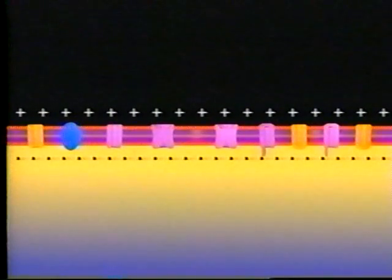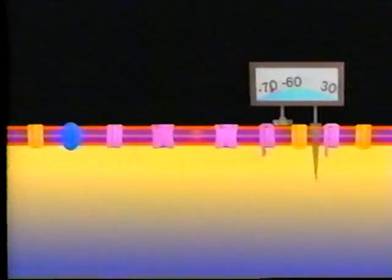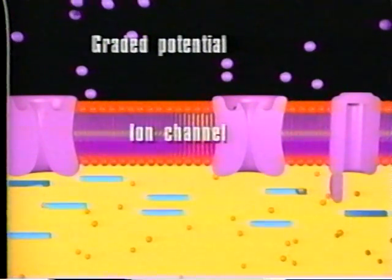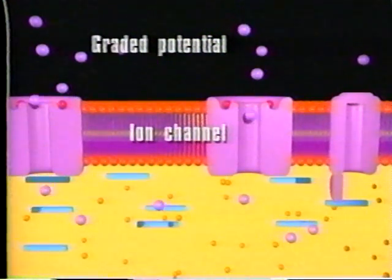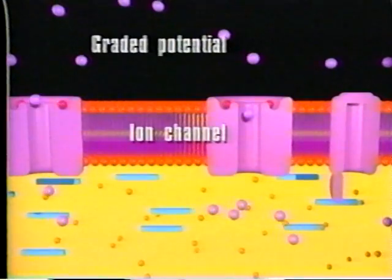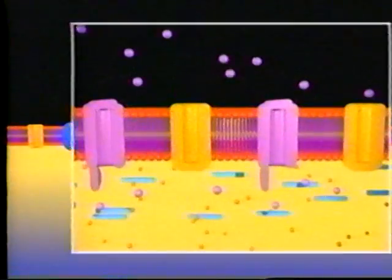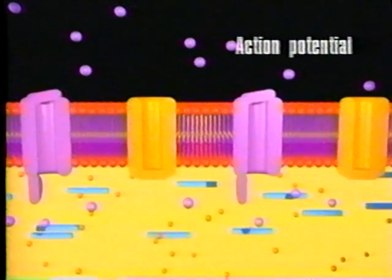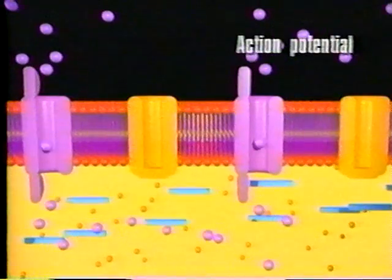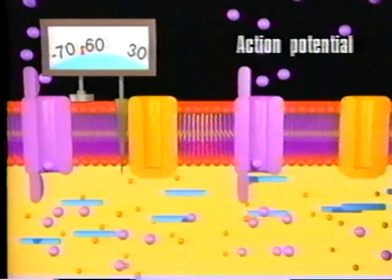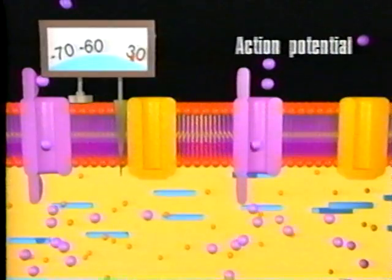An action potential occurs in a series of steps. The resting membrane has a transmembrane potential of minus 70 millivolts. During the first step, a graded potential changes the permeability of the cell membrane so that more sodium ions enter the cell. If enough sodium ions enter to depolarize the membrane to threshold, voltage-regulated sodium channels open. Sodium ions then flood into the cell, changing the transmembrane potential from minus 70 millivolts to plus 30 millivolts.